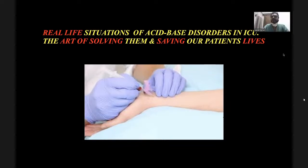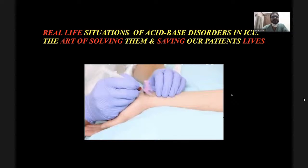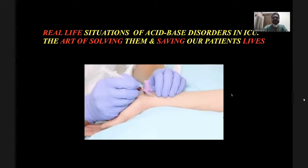A student asked at what concentration does a person go into acidotic coma. There is no specific cutoff value — it depends on the patient's condition. Young patients may not go into coma because they compensate better, whereas an elderly patient with many comorbidities and respiratory issues can go into coma very early. Everything is subjective, depending on overall condition. Some people, even with mild acidosis, don't tolerate it well if they're elderly.